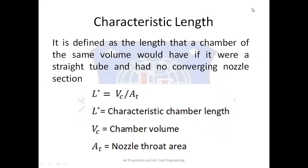Now let's move forward to the characteristic length. The characteristic combustion chamber length is defined as the length that a chamber of the same volume would have if it were a straight tube with no converging nozzle section. The relation is L* = Vc / At, where L* is the characteristic chamber length, Vc is the chamber volume, and At is the nozzle throat area. Typical values of characteristic chamber length are between 0.8 and 3.0 meters for bipropellants, while it is higher for monopropellants.